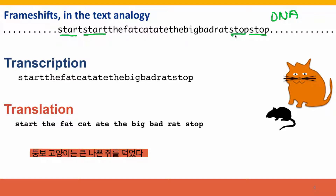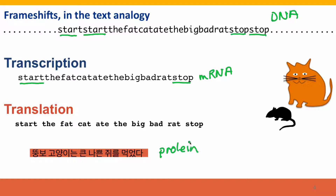In between is the text that codes for the function of the protein. The transcription line represents a messenger RNA — it was begun using this external start signal, so the transcript includes the internal start signal and the internal stop signal, which will be signals that control translation. Below this, we have the same sequence broken down into its triplet codons. And below that, we have the protein that this messenger RNA will be translated into — in this case, we've translated 'the fat cat ate the big bad rat' into Korean.